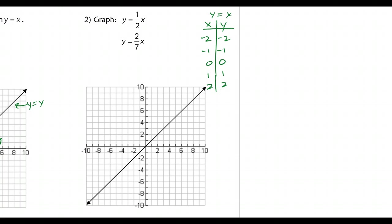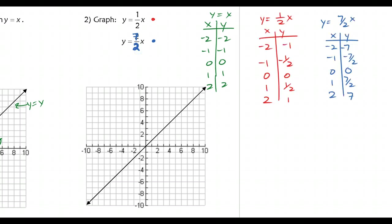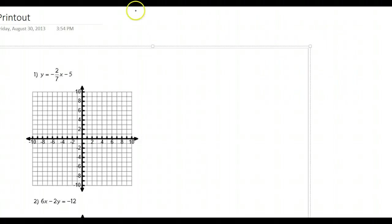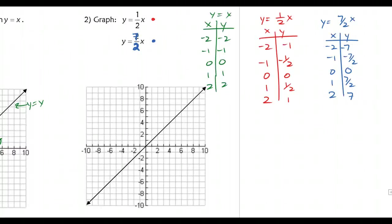I'm going to fill out a table, and I'd like you to pause and do the same — fill out a table for these two functions here, but change the slope to seven halves. Fill out a table because we're going to see some unique things. I just filled out the table for both of those functions. Instead of graphing them using the table, I'm going to use slope-intercept form.